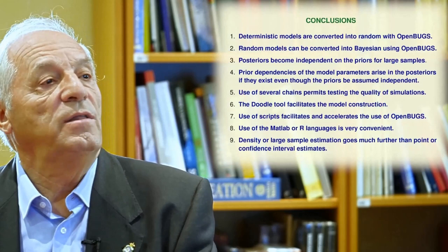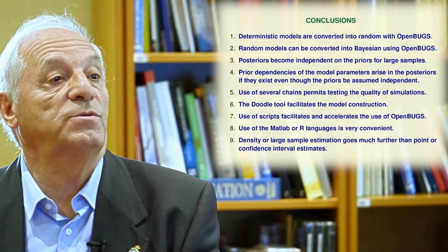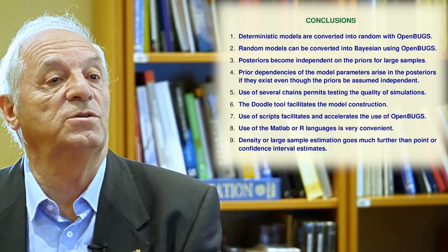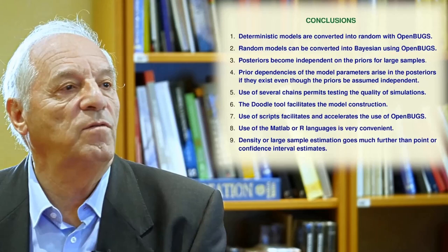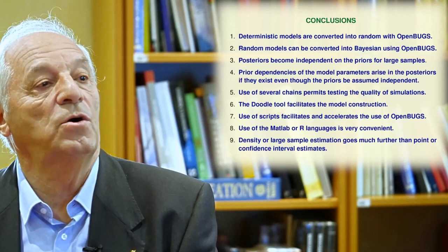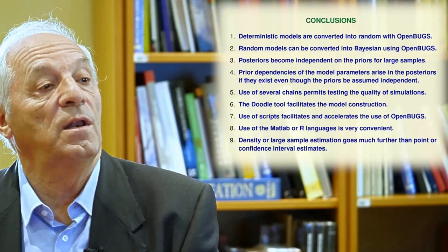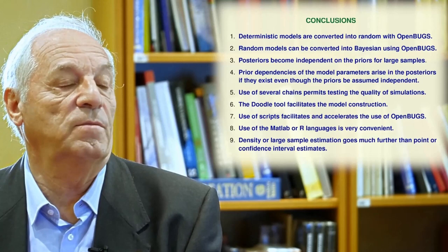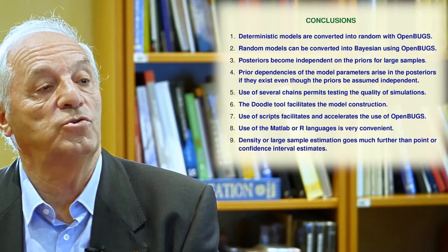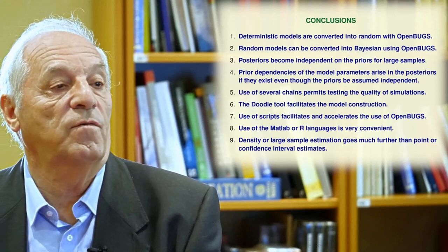In conclusion: deterministic models are converted into random with OpenBUGS very easily. Random models can be converted to Bayesian models using OpenBUGS. The posterior becomes independent of the priors for large samples, which is good because the prior is subjective. Prior dependencies of the model parameters arise in the posterior even if they do not exist in the priors. We must use several chains for testing the quality of the simulation. The Doodle tool facilitates model construction, and scripts facilitate and accelerate the use of OpenBUGS. We also recommend using MATLAB or R languages to accelerate things. Finally, density or large-sample estimation goes much further than point or confidence interval estimates.